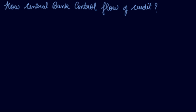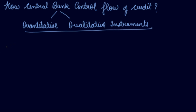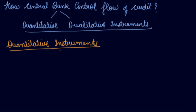In this video we will be studying about how the central bank controls the flow of credit in the economy. There are two instruments through which the central bank controls the flow of credit: the quantitative and the qualitative instruments. In this video we will be discussing about the quantitative instruments of credit control. If the question comes about how the central bank controls the flow of credit, or what are the principal instruments of monetary policy of the central bank, you will discuss both of these instruments.